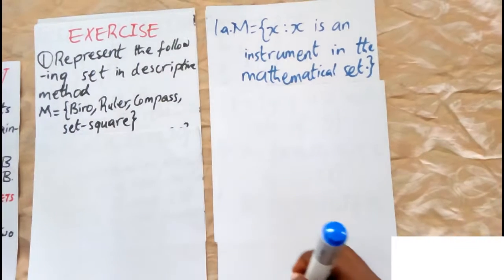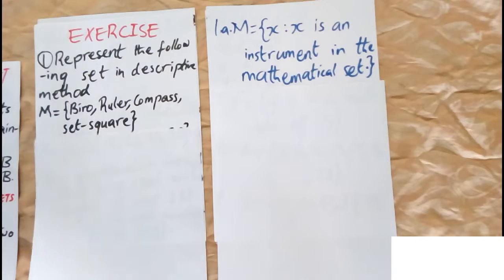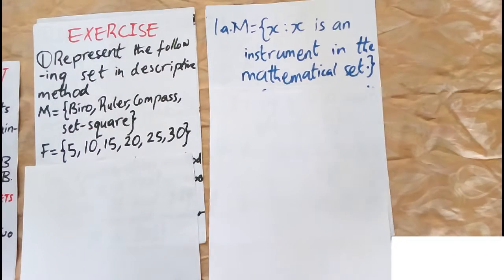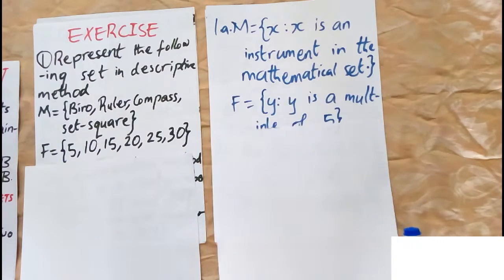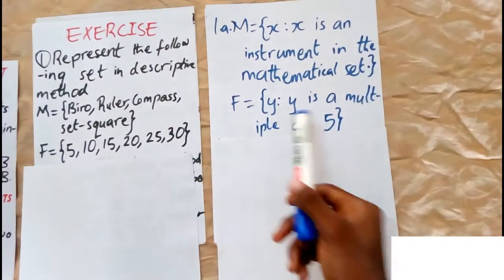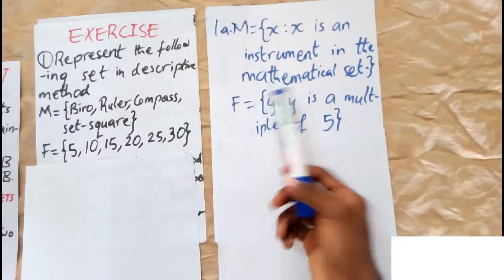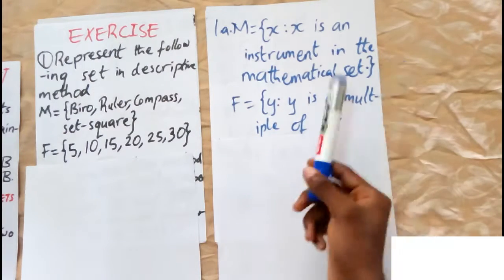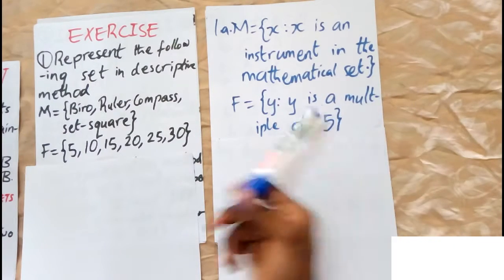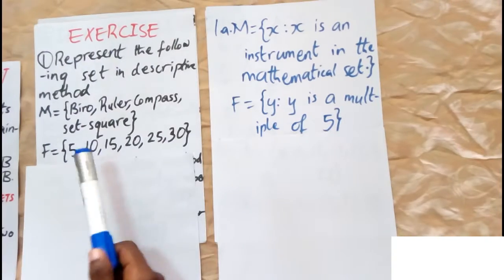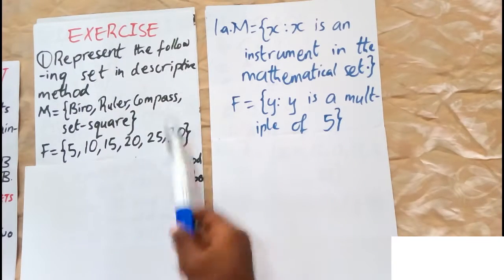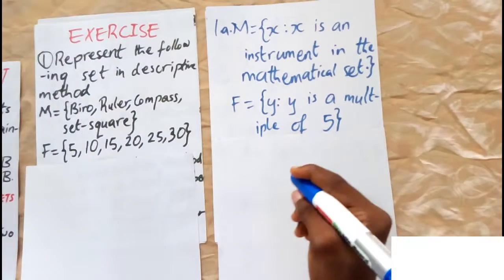The next one was set F. We can describe it as: y such that y is a multiple of five. We have five, ten, fifteen, twenty, twenty-five, and thirty.